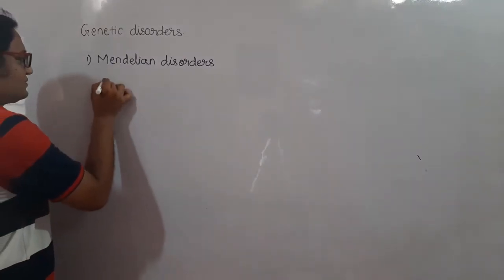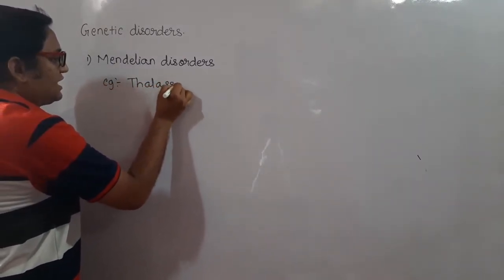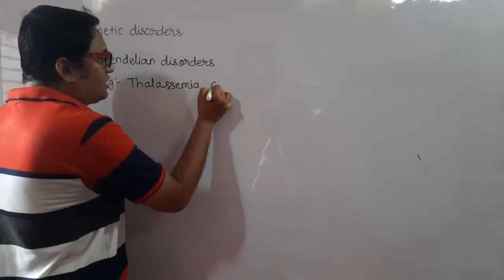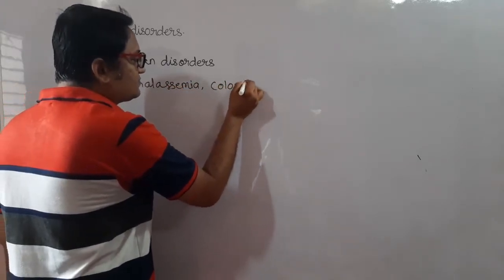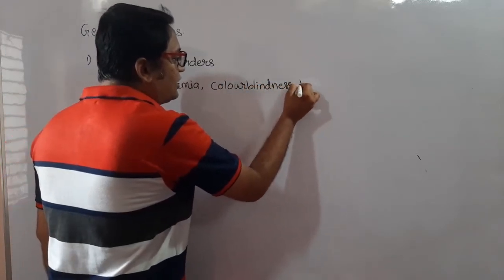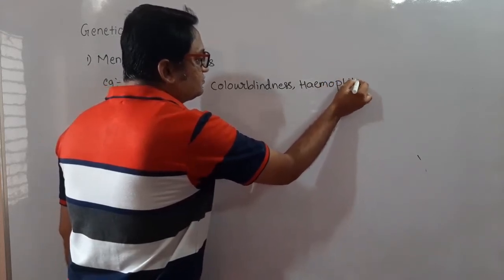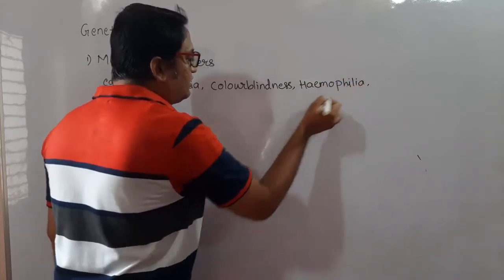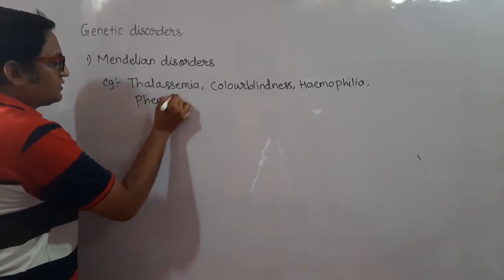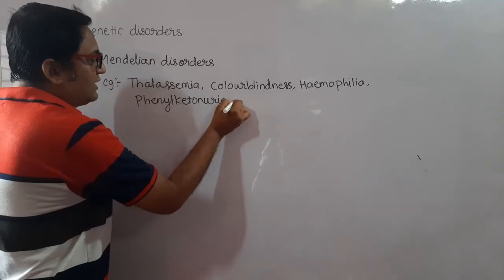Examples of Mendelian disorders are Thalassemia, Color blindness, Hemophilia, Phenylketonuria, etc.